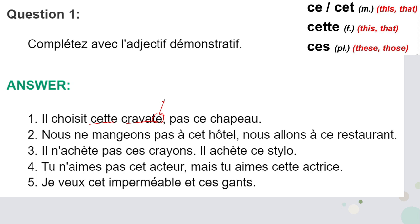Now here we can see 'hôtel'. Hôtel is with an 'o', and 'o' is a vowel. That's why 'cet' will come, because 'o' is a vowel. Next, 'restaurant' — this is a masculine word without a vowel, so that's why we are putting 'ce'. Next, 'crayon' — crayon is with an 's', so that's why we are adding 'ces'.